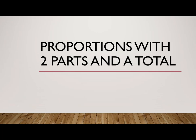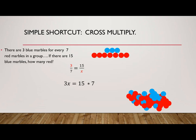Proportions with two parts and a total. For simple proportions, we can cross multiply. There's a ratio, 3 blue marbles for every 7 red marbles in a group. If there are 15 blue marbles, how many red would there be?